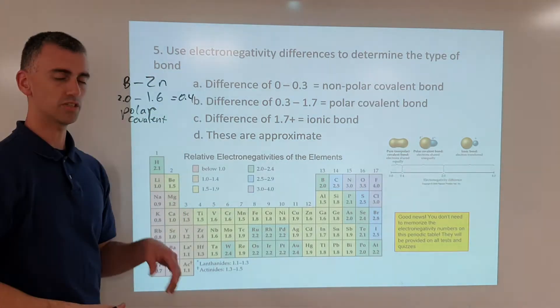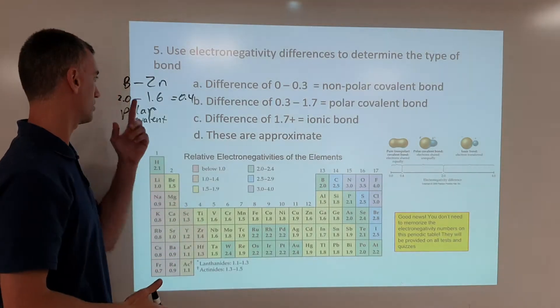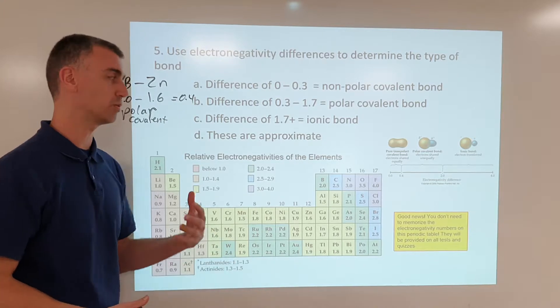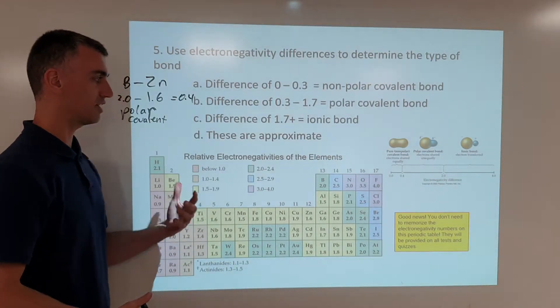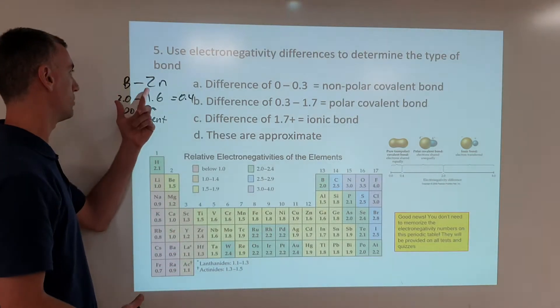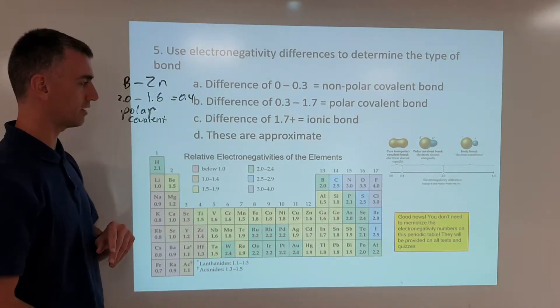So just because a trend exists, like metals and nonmetals tend to make ionic compounds, doesn't necessarily mean they always do. It's a good guess, but you need to check the math to make sure that it is actually so. In this case, metal and nonmetal make a polar covalent compound.